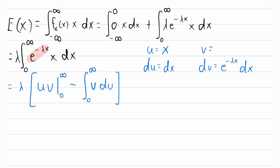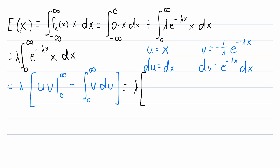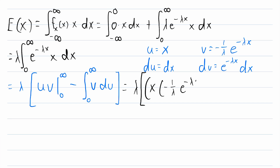Now let's integrate dv to find v. That gives us negative 1 over lambda multiplied by e to the negative lambda x, because when we integrate the exponential function we keep the same function but divide by the derivative of the exponent. Applying integration by parts, we get lambda out front multiplied by u times v — that's x times negative 1 over lambda times e to the negative lambda x — evaluated from 0 to infinity.